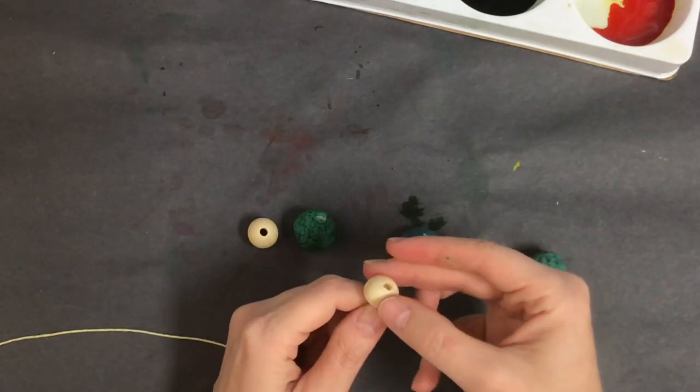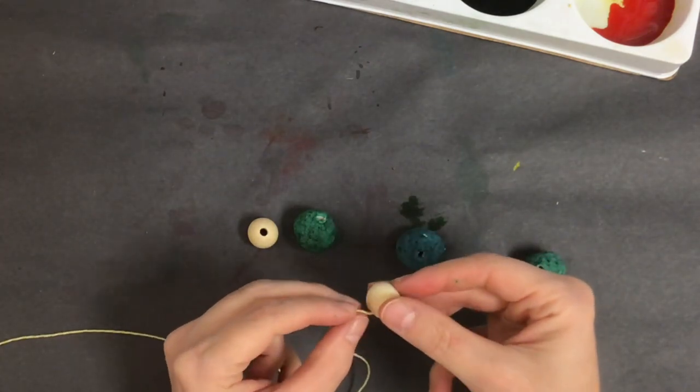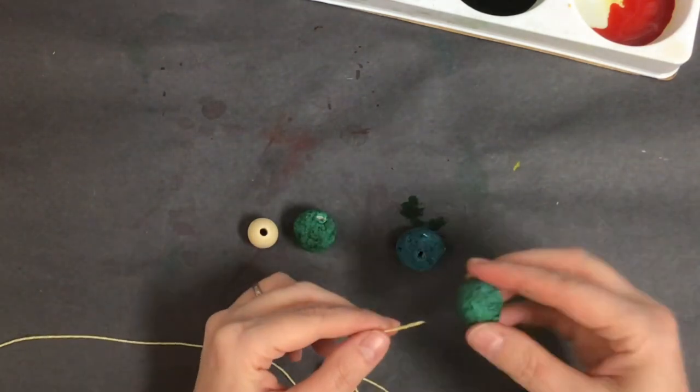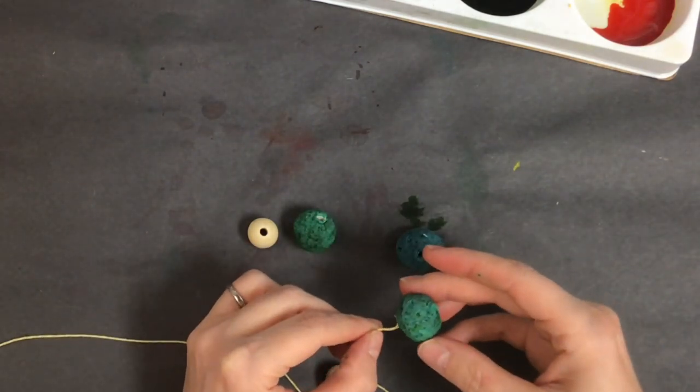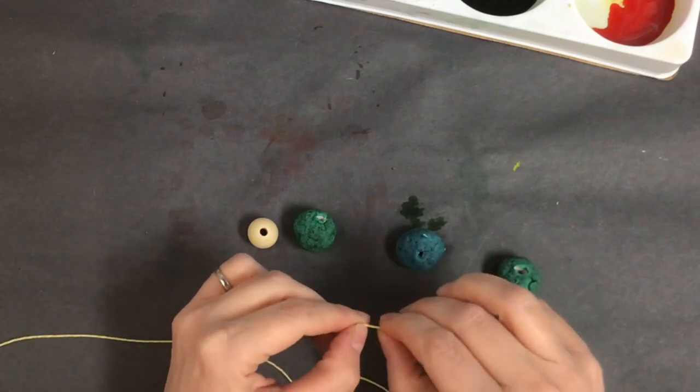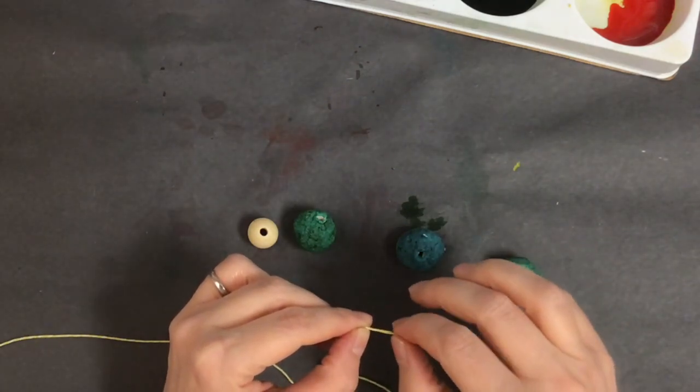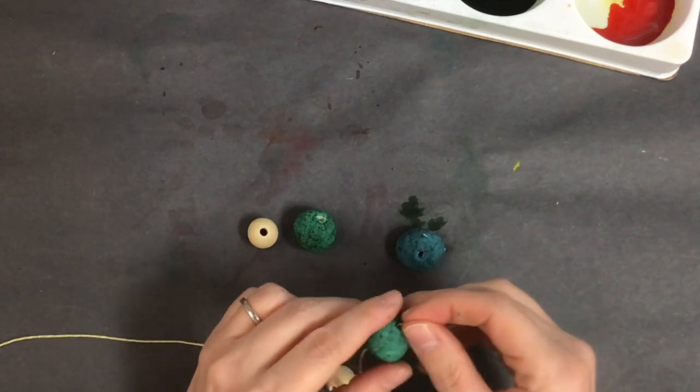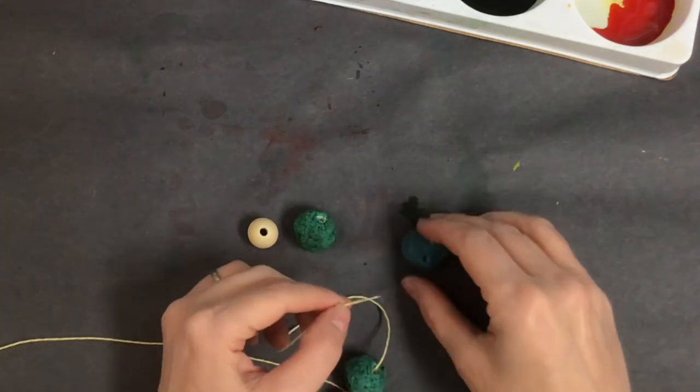Then you're simply going to string the beads. This can be tricky, especially if the holes for your beads are a little bit tiny. Try your best. If you're in the classroom, you might want to have a grown-up help you. Even if you're at home, you might consider having a grown-up help you if it's difficult for you to string those beads.